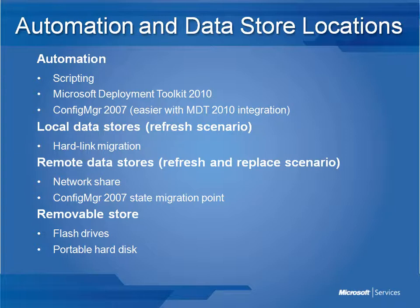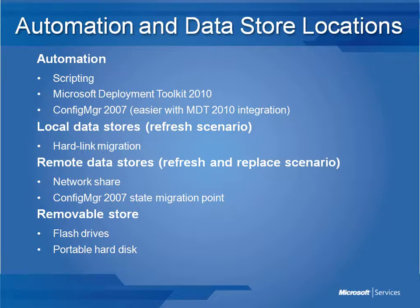These scripts provide automation services such as where to store the user state and the generation of XML-based control files. The scripts will programmatically adjust the command lines run as part of the user state migration based on input variables. Part of that is to determine whether user state should be stored locally as a hardlink migration store, or whether remote data stores such as network shares or a Config Manager 2007 state migration point is required.